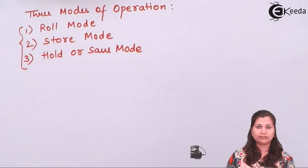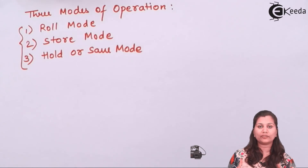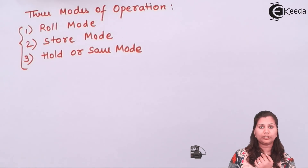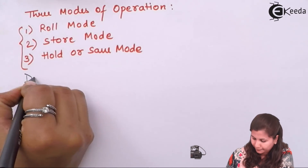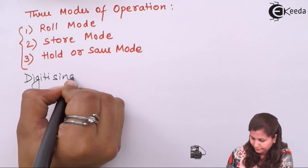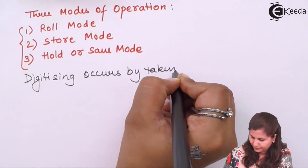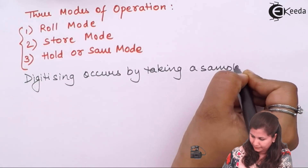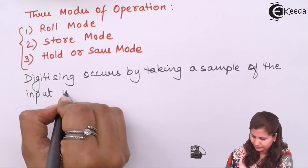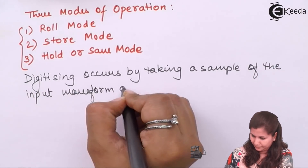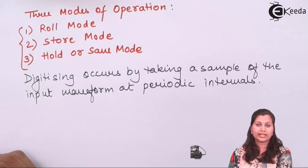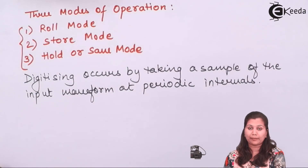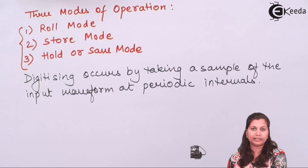In the DSO, the digitizing of the signal is done — an input signal is converted into digital form. Digitizing is done by taking samples of the input waveform at periodic intervals. In sampling, at certain time intervals we pick the value of the input waveform.